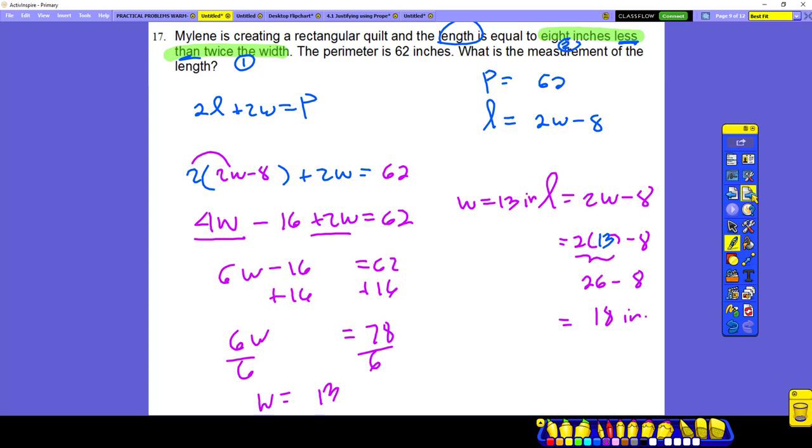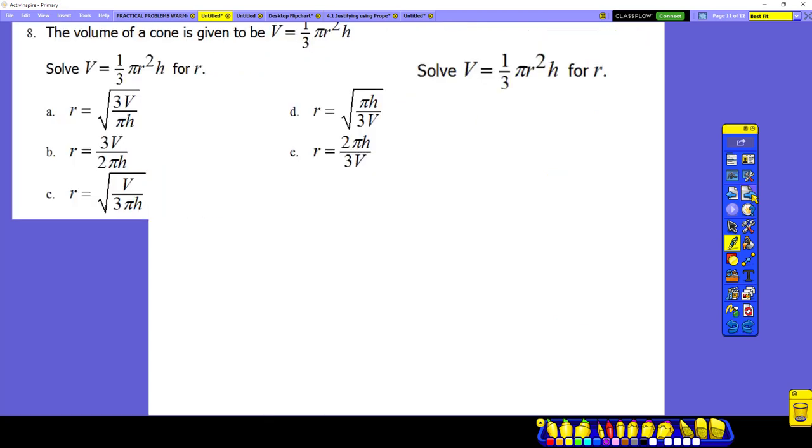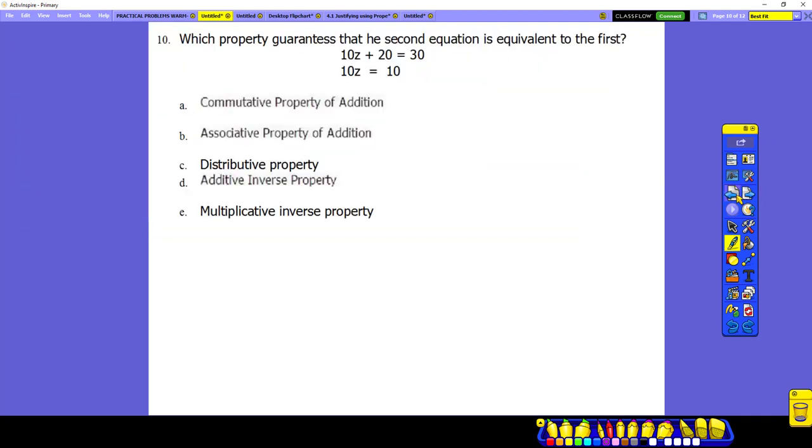All right. So that's how we do number 17. I also ask you to do number 10 and 3, right? Let's do number 10 first. How do I get this to this? What should I do? Subtract 20, right? Subtract 20. Subtract 20. And what is this? When you subtract 20 both sides.